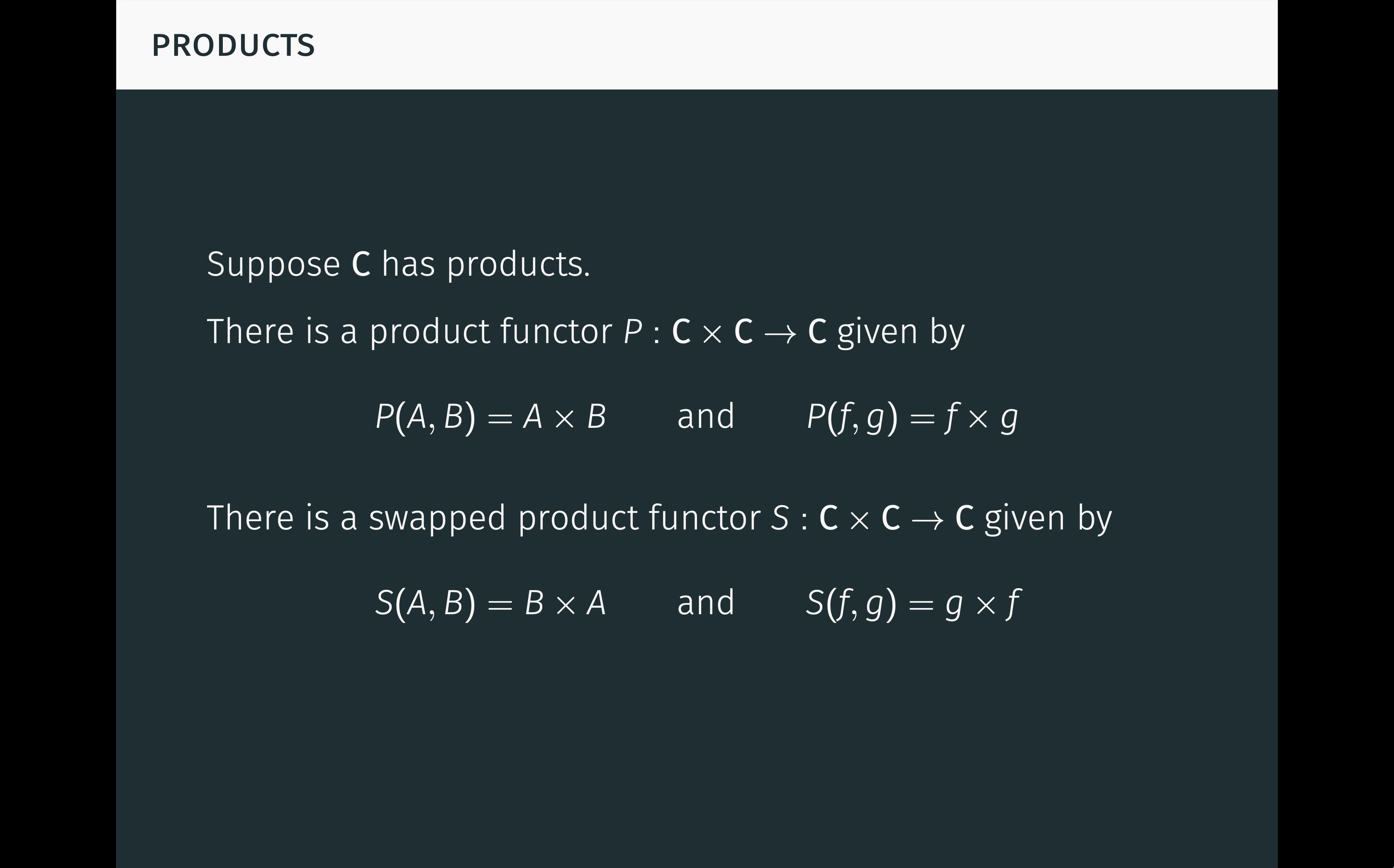There's also a swapped product functor S from C times C to C, which maps the objects A and B to the product B times A, and maps arrows f and g to the product g times f. Notice the only difference between P and S is that the order of the factors in the products is swapped.